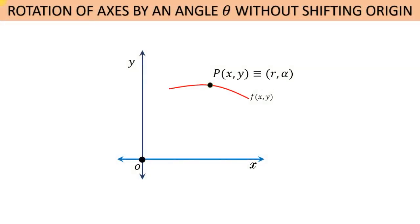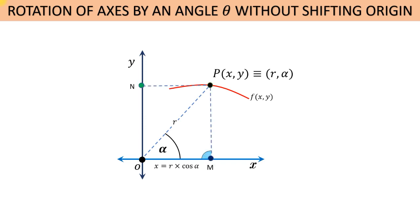Suppose P is an arbitrary point on the curve f(x, y) and its distance from the origin is equal to r, and its position vector makes an angle alpha with the positive direction of the x-axis. As per construction, the length of OM is equal to r·cos(alpha) and the length of PM is equal to r·sin(alpha).